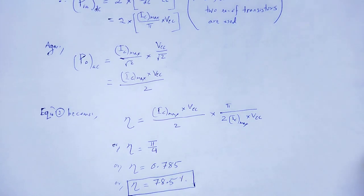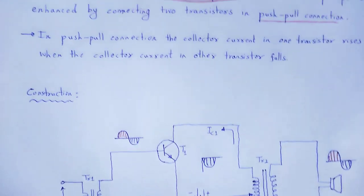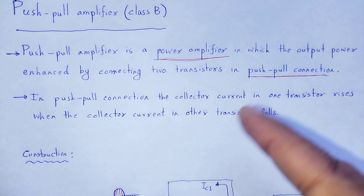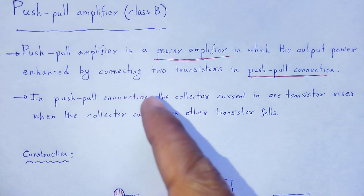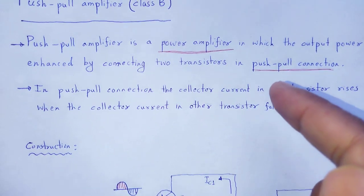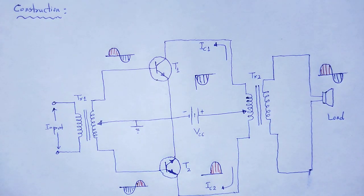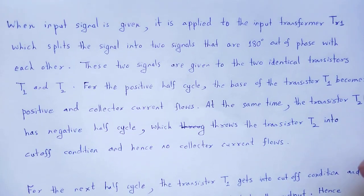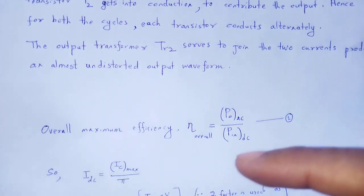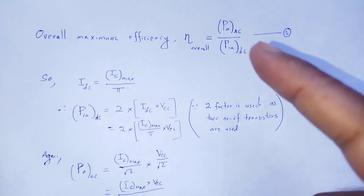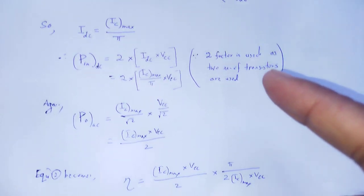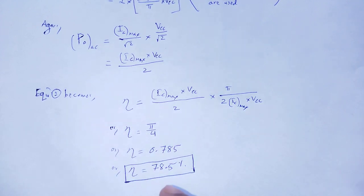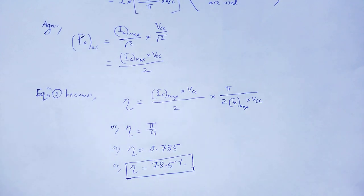So, with the help of this video lecture we understand the concept of class B push-pull amplifier: what it is, why it is called a push-pull amplifier, its construction and working, and the overall maximum efficiency, which is mathematically shown to be around 78.5 percent. With these useful and informative notes, let me wind up this session. Thank you.